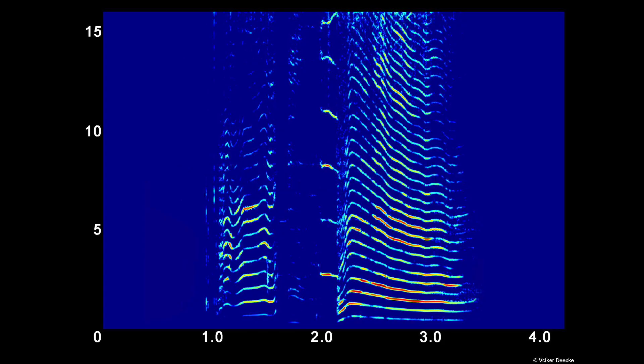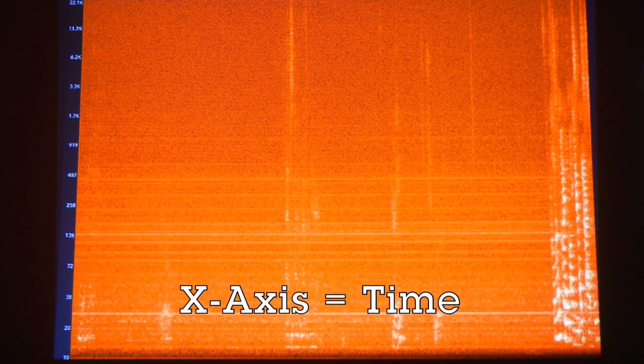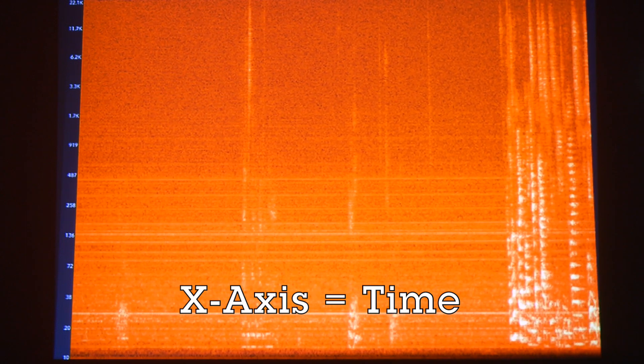A spectrogram is a tool that helps us see sound. From left to right on the x-axis you can see time slowly scrolling by.